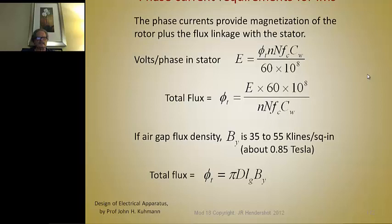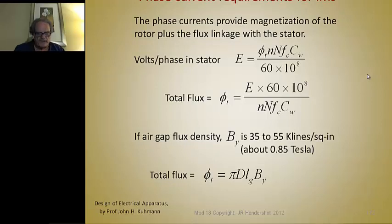The phase current requirements can be calculated, including the volts per phase in the stator. The total flux in the stator is calculated from these formulas, targeting an air gap flux density of about 0.85 Tesla, or 55,000 lines per square inch. There's also a formula for total flux.